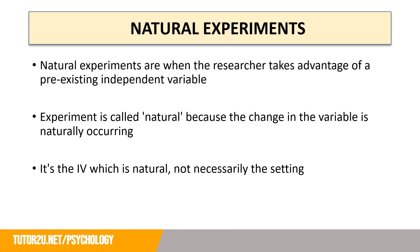Now we'll look at natural experiments. People commonly confuse natural and field experiments. Remember, in a field experiment the researcher manipulates the IV — the researcher is in control — just in a natural setting. In a natural experiment, the researcher takes advantage of a pre-existing independent variable that they are not controlling; the change is naturally occurring. It is the IV which is natural, not necessarily the setting.